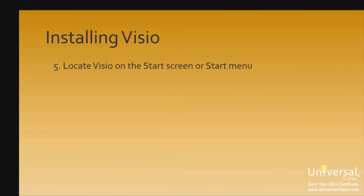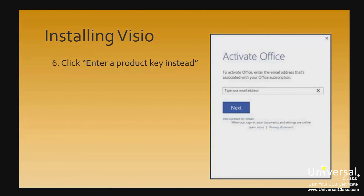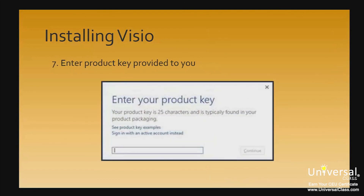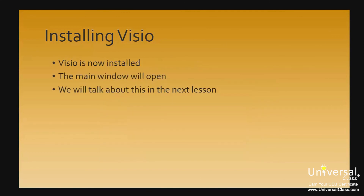Once Visio is installed, locate it on your computer. If you're using Windows 8 or 8.1, go to your Start screen, locate Visio, and open it. You'll be asked to sign in to your Windows Live account to verify your copy of Visio is genuine. If you downloaded a free trial of Visio 2013, you must enter the product key to verify it. Click the blue link that says 'Enter product key instead', enter the product key given to you when you created your profile, and click Continue. Visio will then be installed and the main window of Microsoft Visio will open.